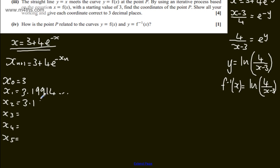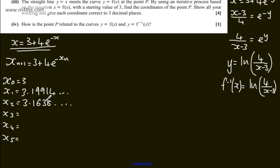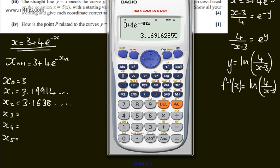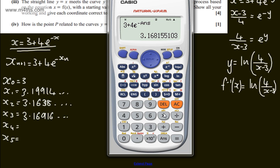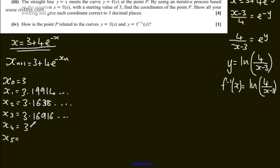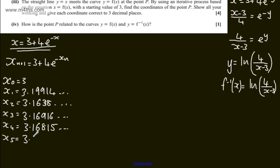If we look at the next one, we're going to have 136. Let's now look at the next one, 16916. If we look at the next one, we've got 16815. And this one should be the same. 16832. Therefore, we can say that this is going to be 3.168, and that will be to 3 decimal places.